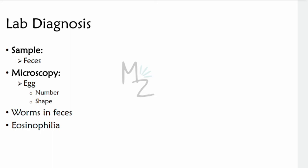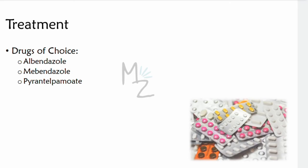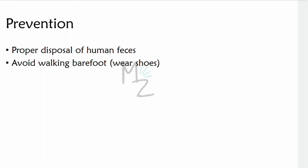Lab diagnosis: a sample of feces is needed. Diagnosis is made microscopically by observing the eggs in the stool — we look for the number and shape of the eggs. Occult blood in the stool is frequent, and eosinophilia is typical. Treatment: the drugs of choice are albendazole, mebendazole, and pyrantel pamoate. Prevention: disposing of sewage properly and wearing shoes are effective means of prevention.